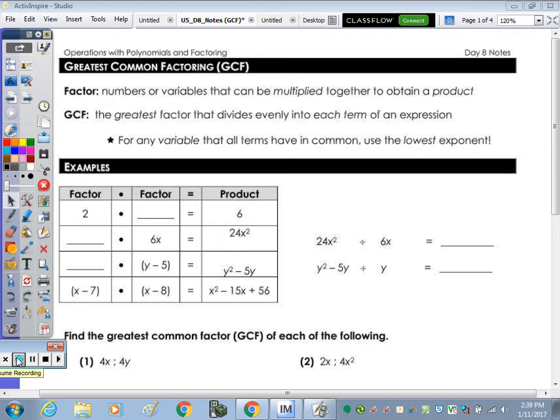So today in our notes we're going to start factoring. We're going to undo multiplication, so we're working backwards. When you think of factors of six, I'll pick a small number so there's not as many, what are the factors of six?